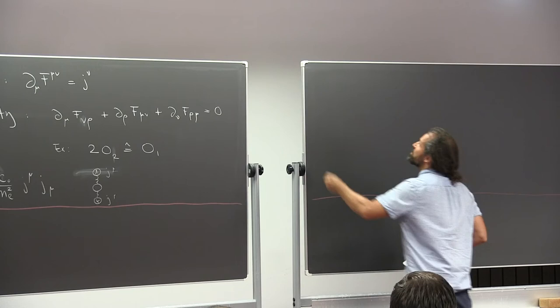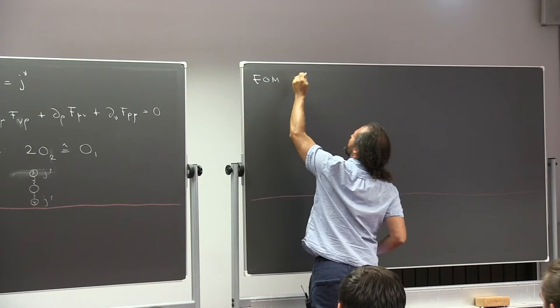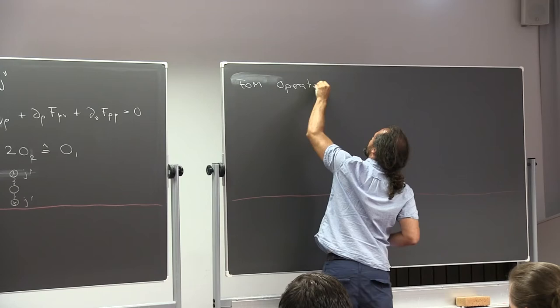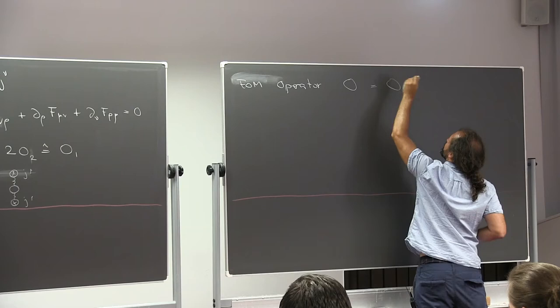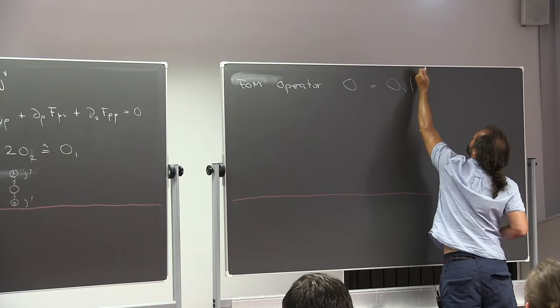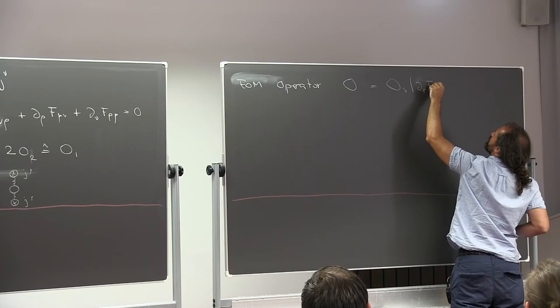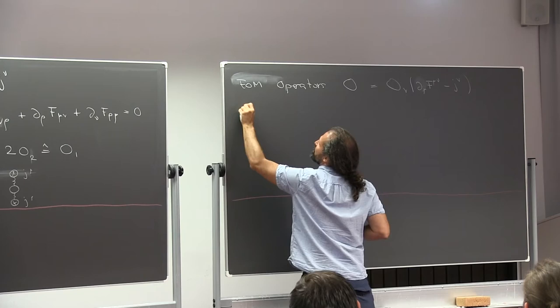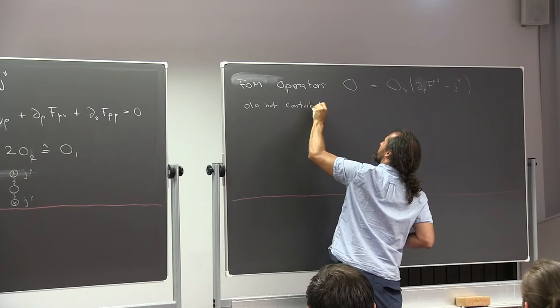Let me first define what an equation-of-motion operator is. An equation-of-motion operator is an operator which has something multiplied by the classical equation of motion: D_mu F^{mu nu} minus J^mu. The claim is that these do not contribute to physical quantities.